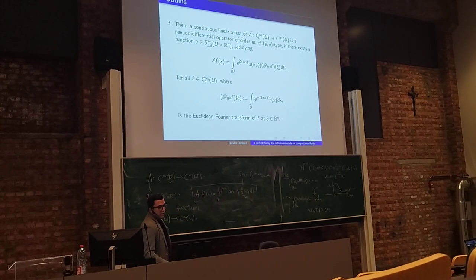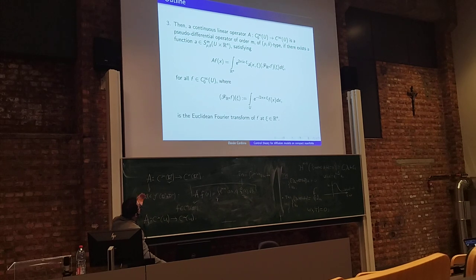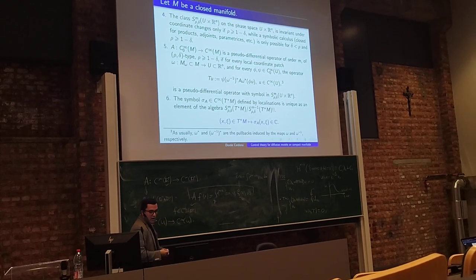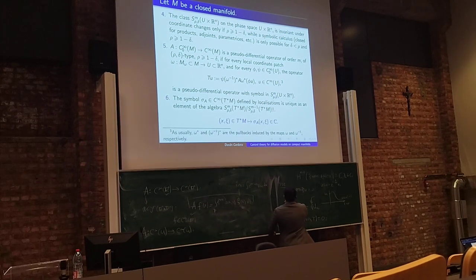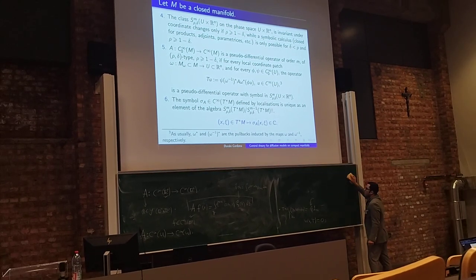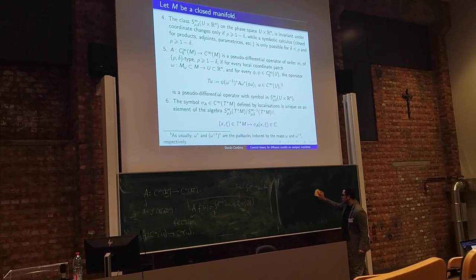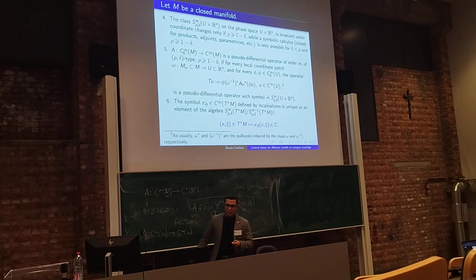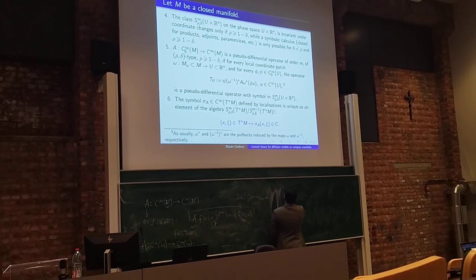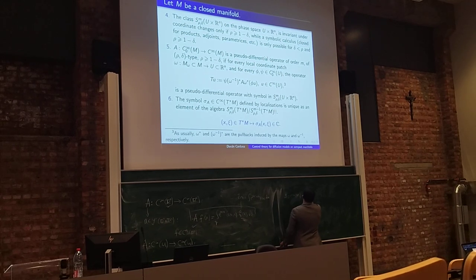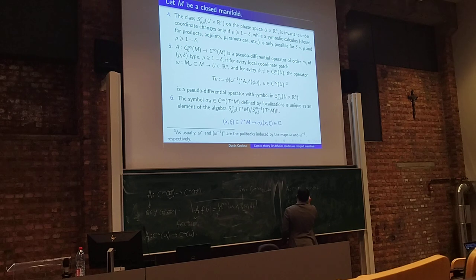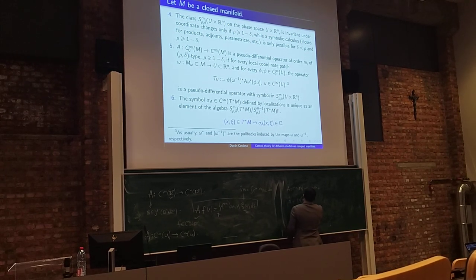Once you define pseudo-differential operators on an open subset, you can make the standard extension to manifolds. If you want to define a pseudo-differential operator on a manifold, you associate a symbol in a similar way as on R^n, but now the symbol is a section of the cotangent bundle. You construct the symbol by localizing the operator using charts and local coordinate systems.